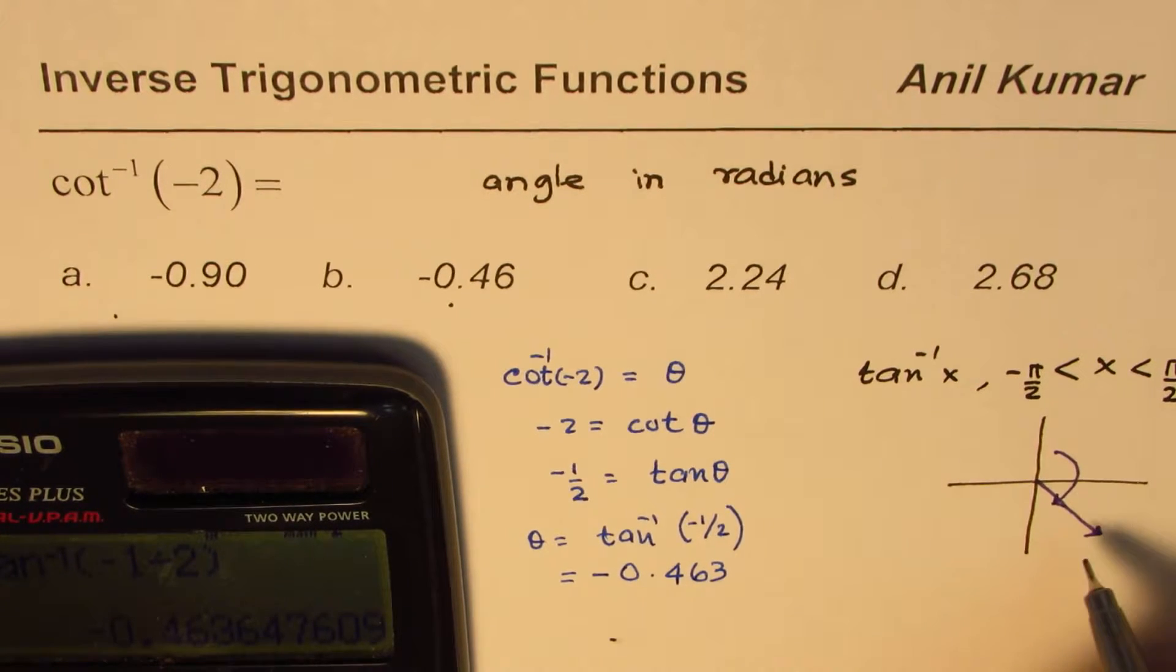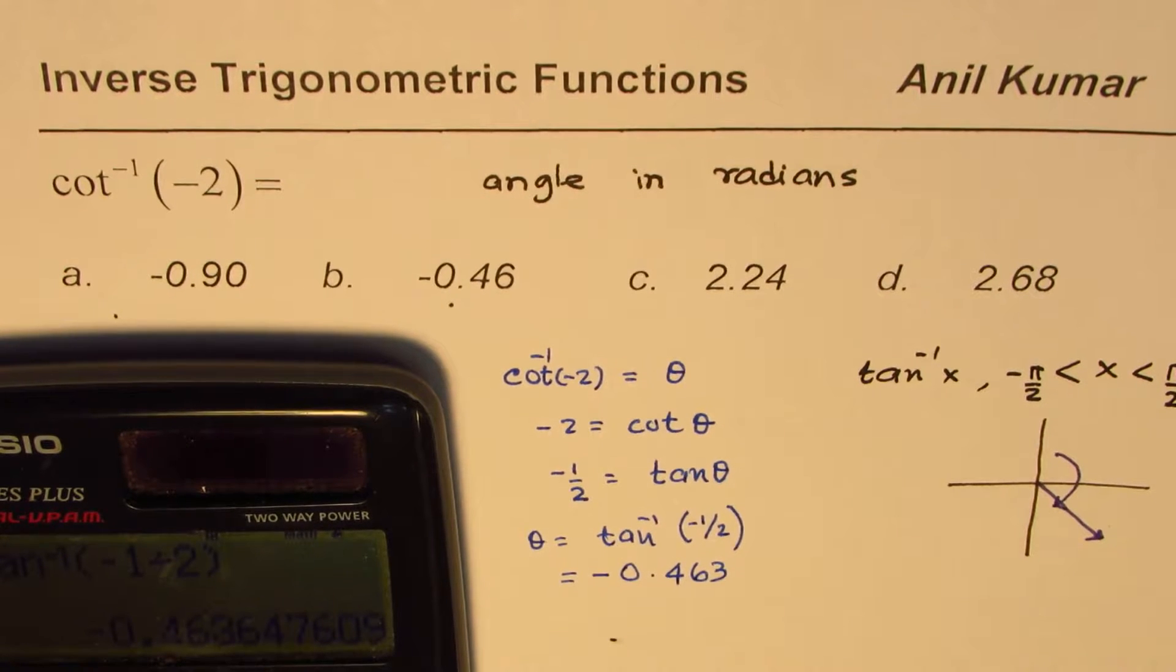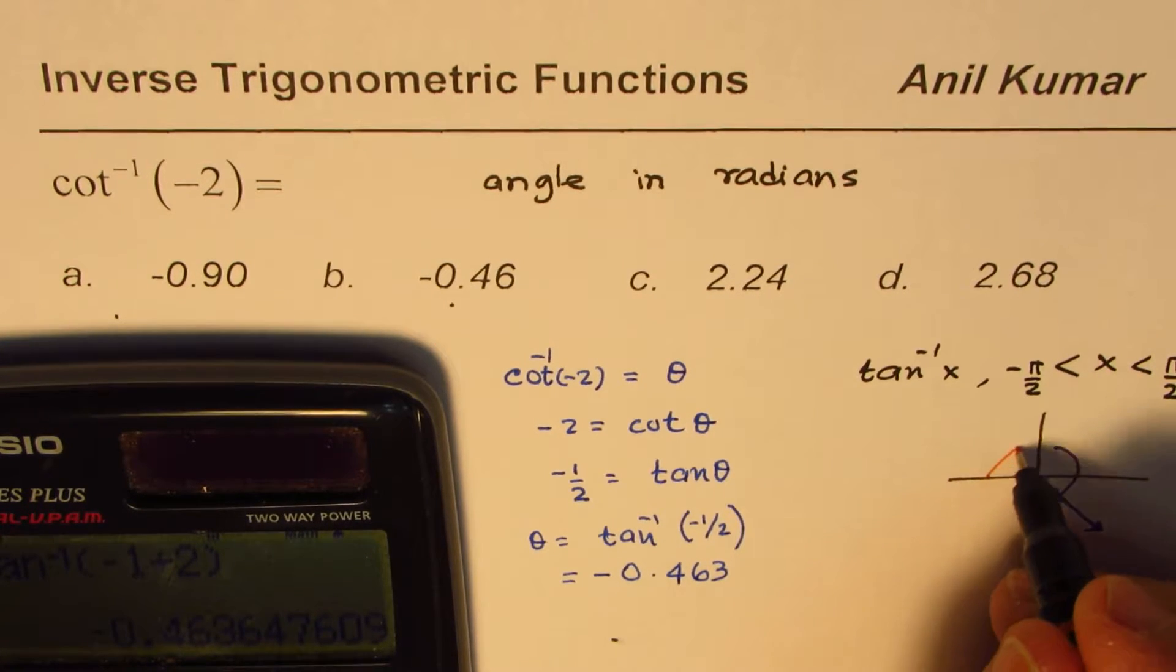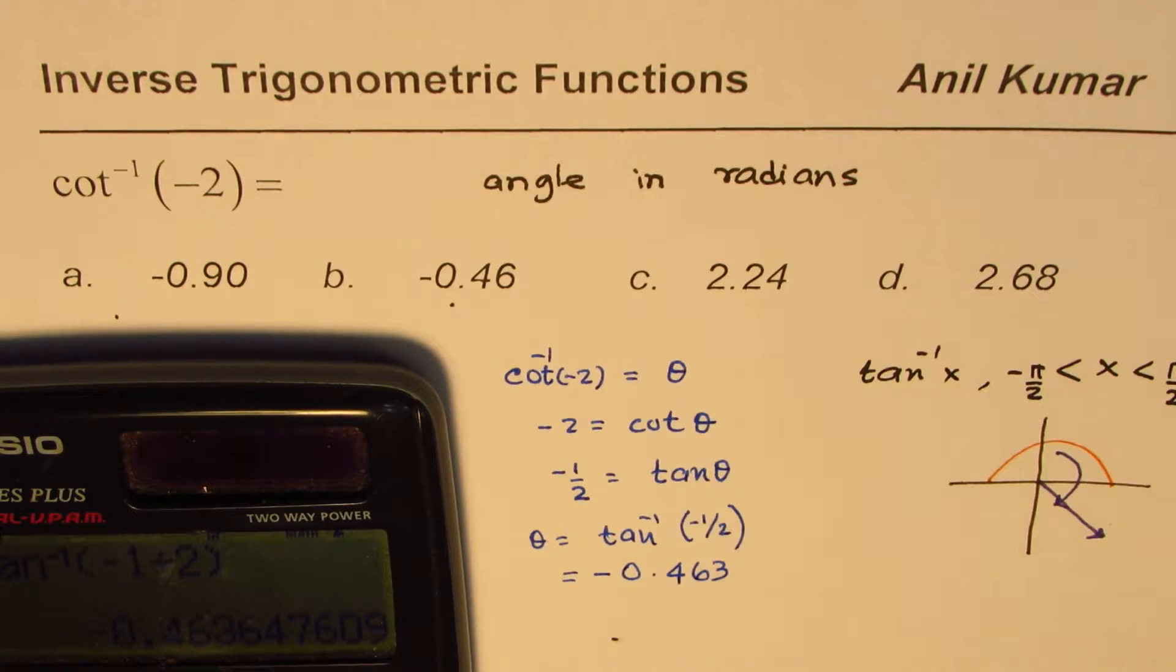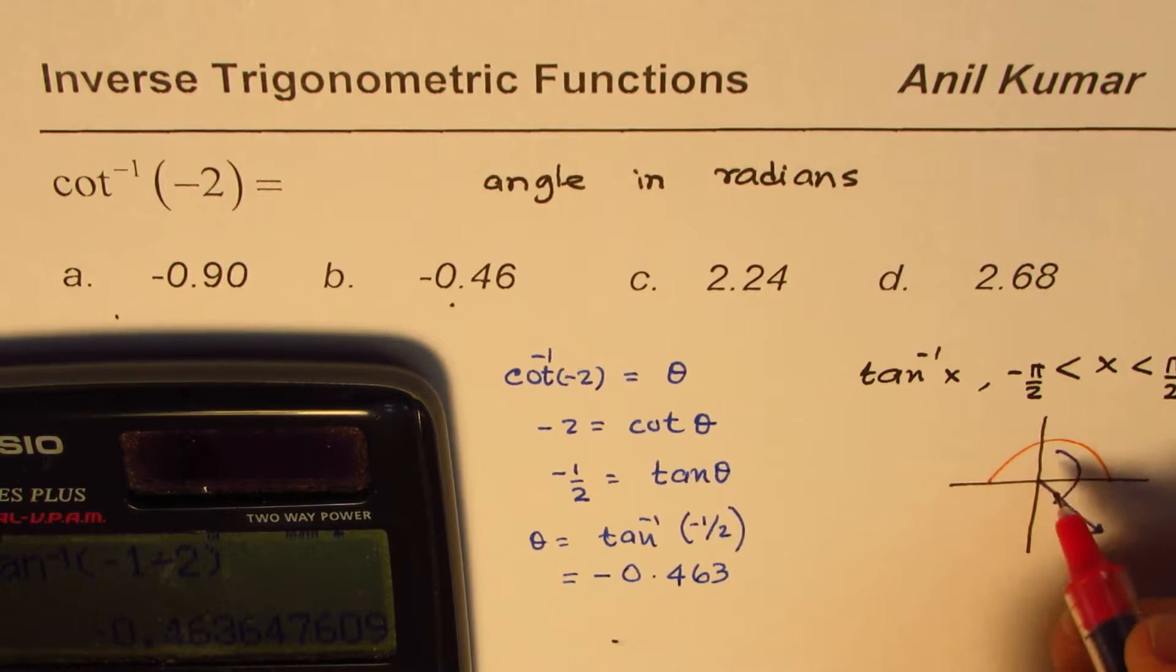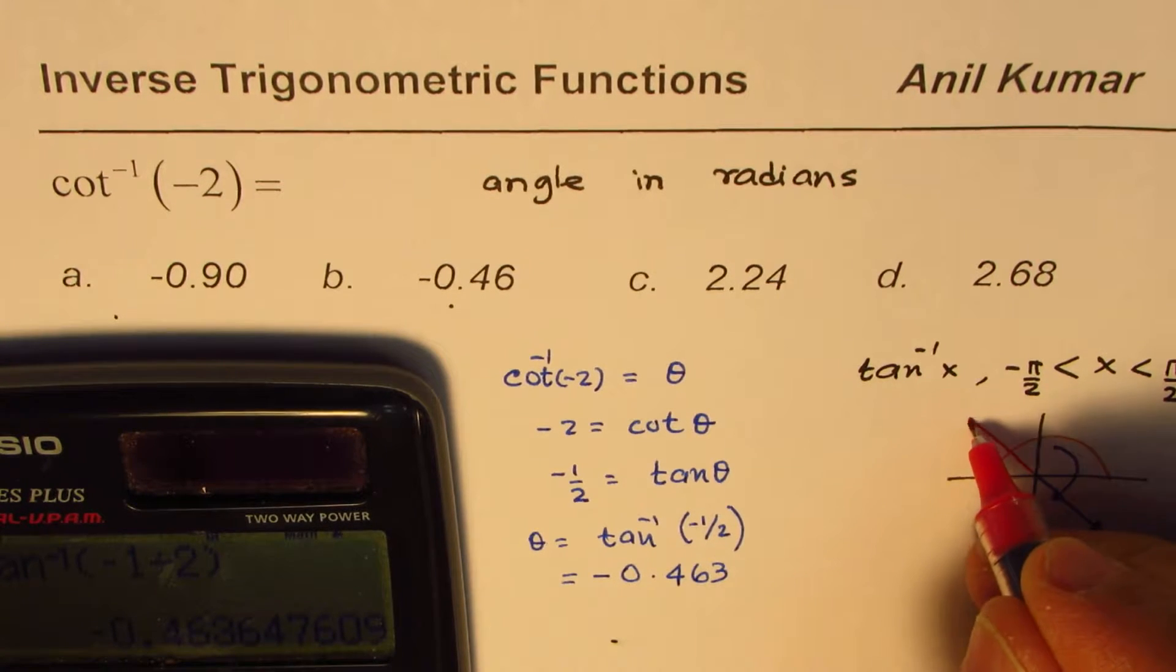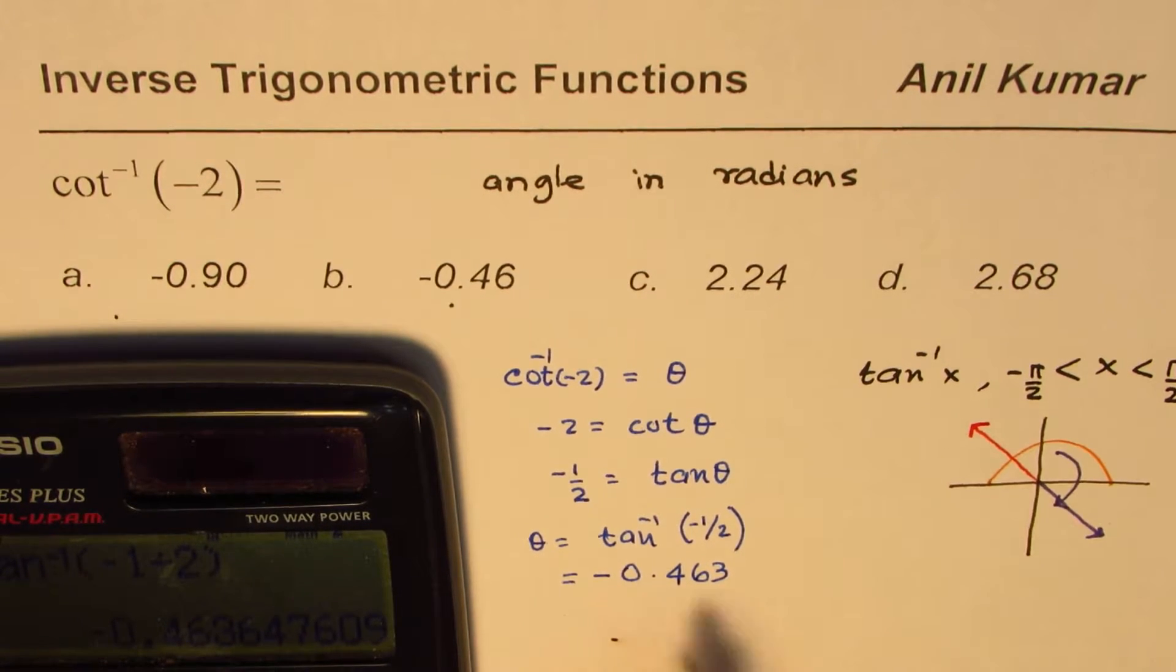Since tan function is defined from minus pi by 2 to this place, what you got here was kind of this place. Cotangent is defined in 0 to pi portion. Is it okay?